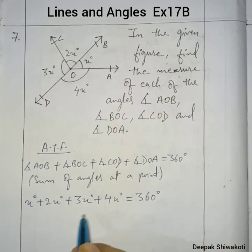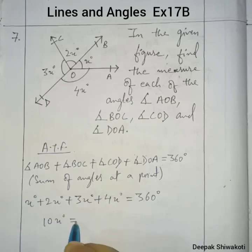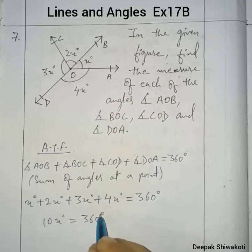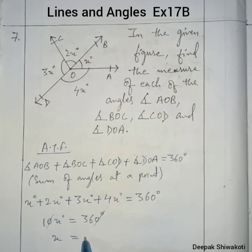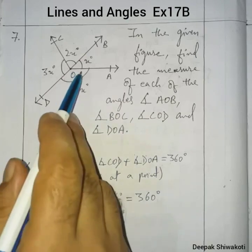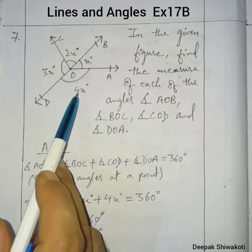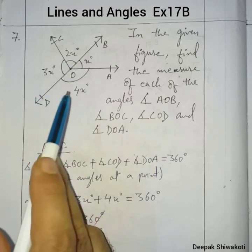When we add x plus 2x plus 3x plus 4x, we get 10x degrees equals 360 degrees. Therefore x equals 36 degrees. Now we can find each of the individual angles.